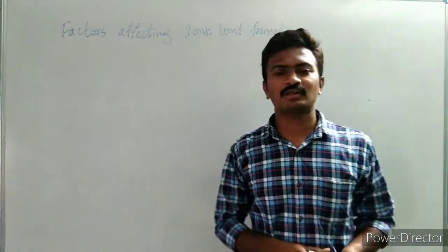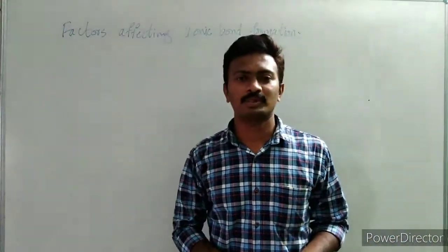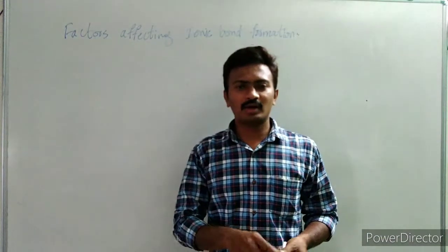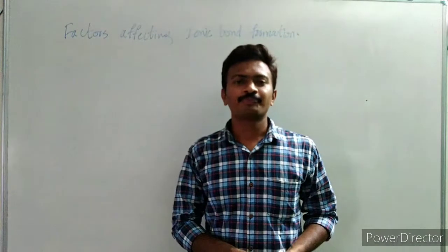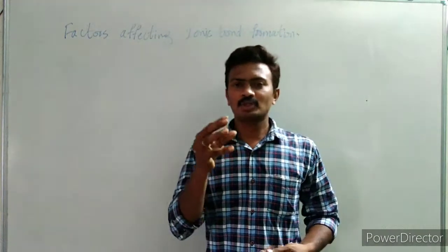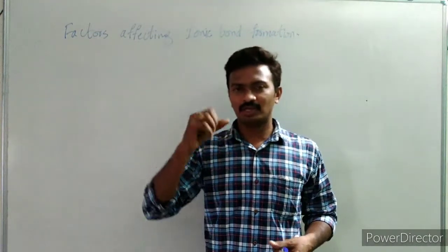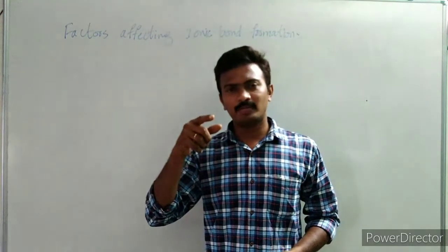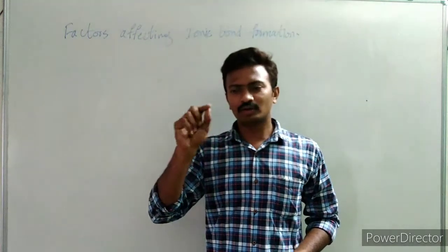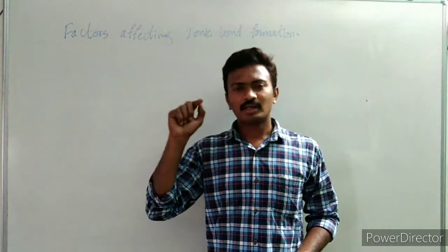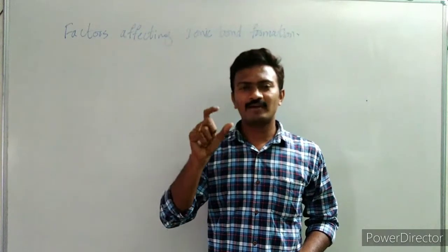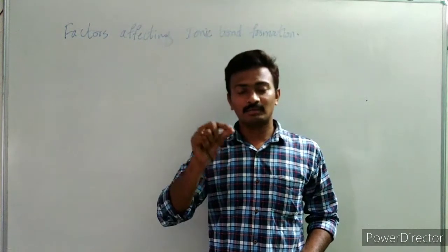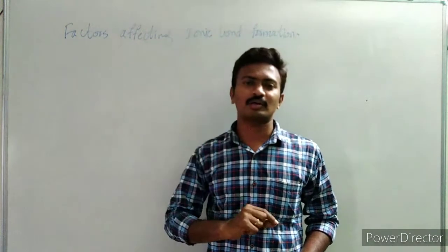There are four major factors which affect ionic bond formation. In order to form a cation, that atom should have a very big size. Then only it can lose the electron. Cation is formed by losing an electron. So, in order to lose that electron, that atom should have less interaction between the nucleus and the electron.